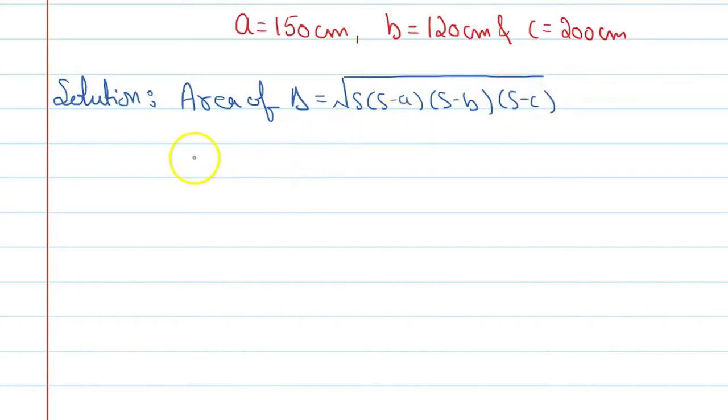Here s is the semi-perimeter. Semi-perimeter value will be a plus b plus c upon 2. So let's find the value: s is equal to 150 plus 120 plus 200 upon 2, so it is 470 upon 2.